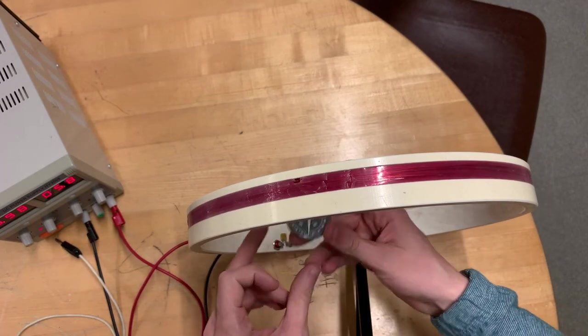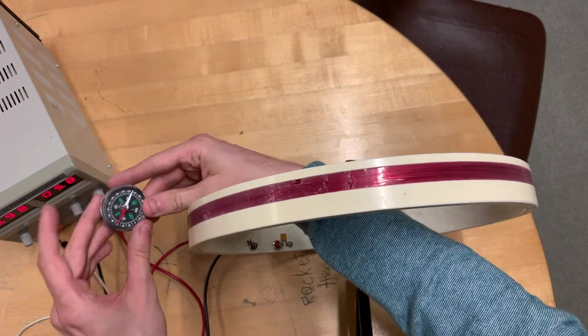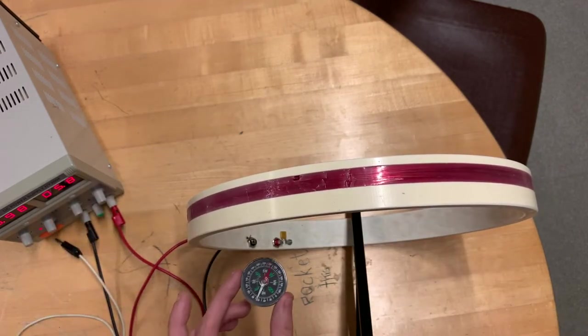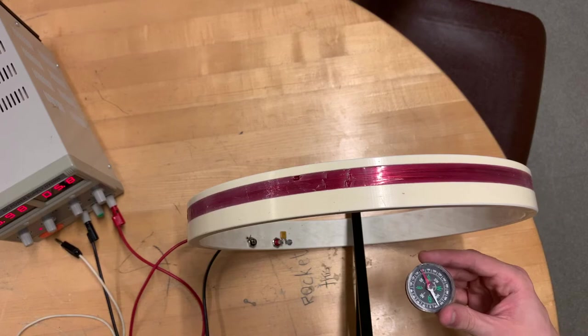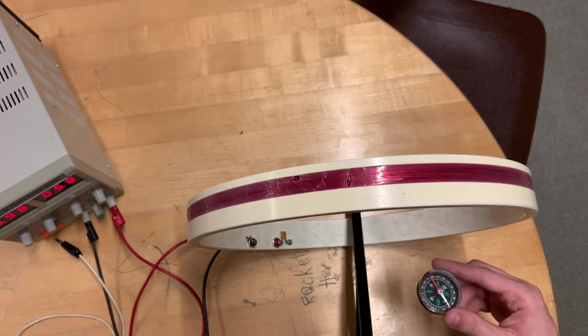It seems as though the magnetic field is forming these nice closed loops around the wires. This actually turns out to be correct. We can determine this by using the right-hand rule.